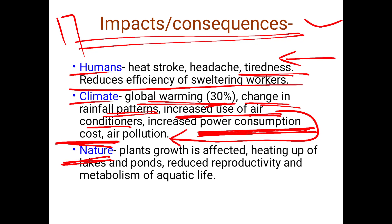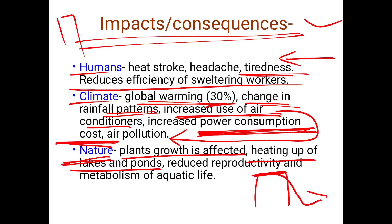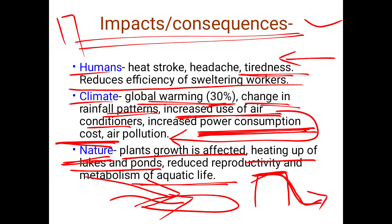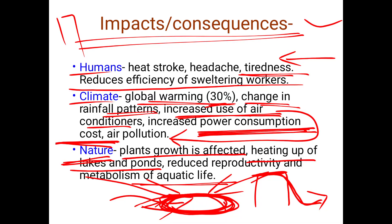On nature, plant growth is affected because plants, like humans, cannot tolerate excessive heat. Heating up of lakes and ponds also occurs — rainwater runoff from heated rooftops flows into lakes and raises their temperature, affecting the metabolism and reproductivity of aquatic life. Urbanization also shrinks water bodies, reducing their capacity to dissipate heat.